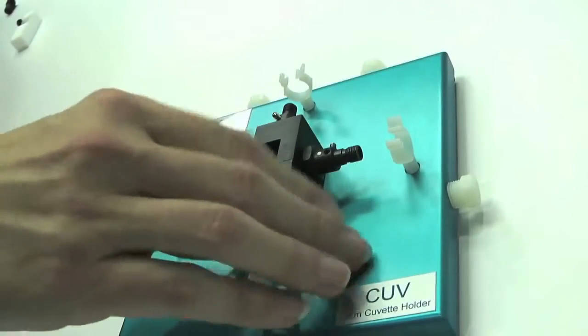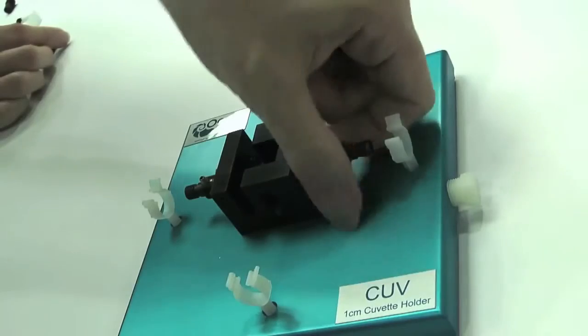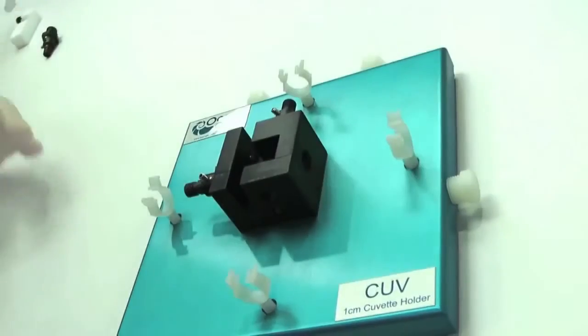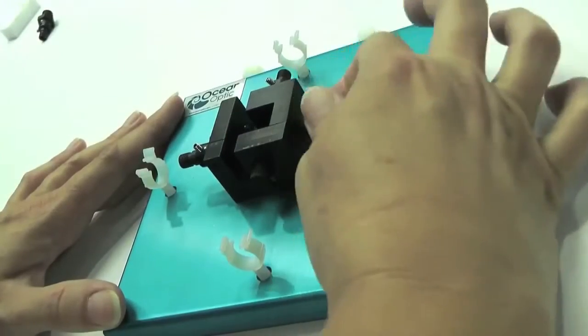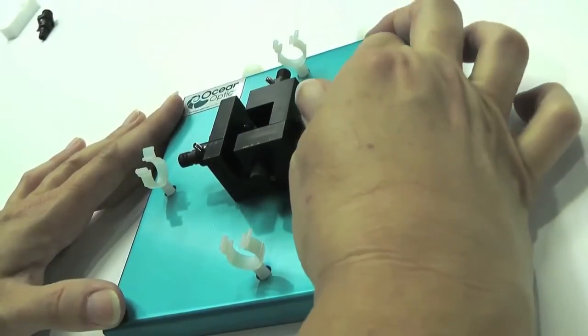Using your CUV cuvette holder you can replace two of the 74 UV lenses with the two mirrored screw plugs provided, which reflect light back through the sample in order to enhance the fluorescent signal.